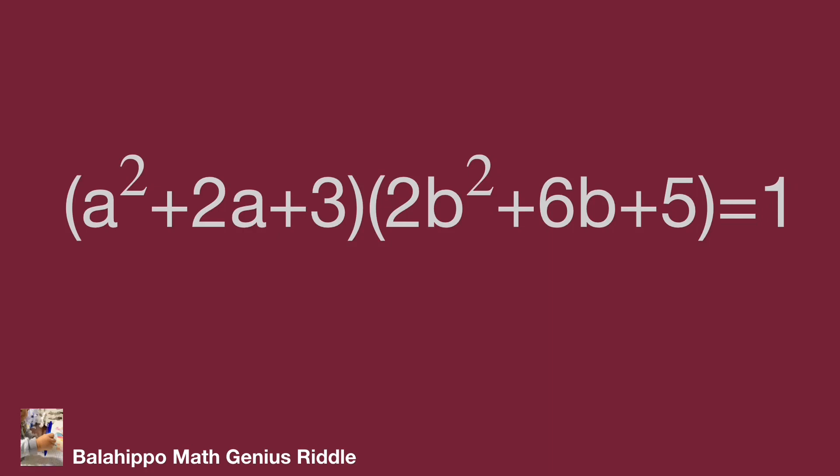I'm going to generate more information from the given information. So look at the first quantity, a² + 2a + 3. We have a² + 2a. If I generate a square term in this quantity, then prove the quantity is positive, it will be easy to solve the question.